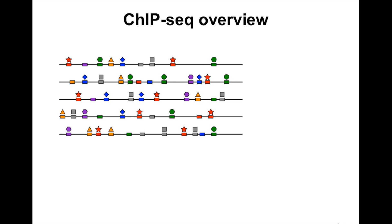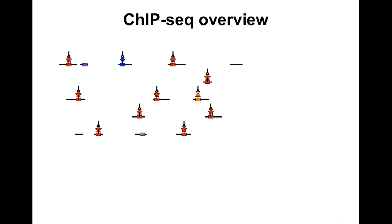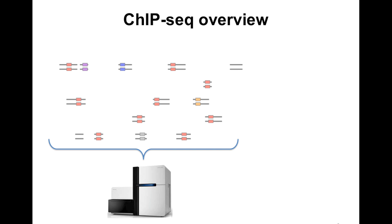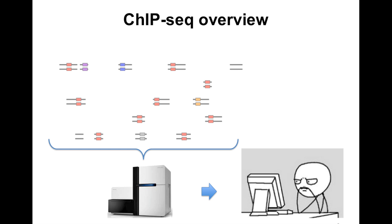A variety of transcription factors and histone marks have distinct distributions in the genome. In the ChIP-seq experiment, one can profile the genomic distribution of one protein factor at a time. The typical steps include: cross-linking the protein with the DNA they interact with, chopping the DNA by sonication or micrococcal nuclease digestion, then using an antibody specific to the protein factor to pull down the DNA fragments. After DNA purification, PCR amplification, high-throughput sequencing, and sequence alignment, one can get the sequence reads that label the genomic locations of the ChIPed factor.